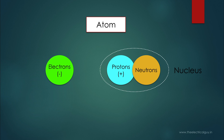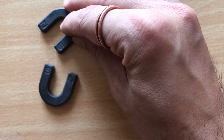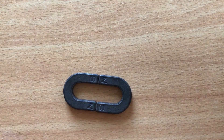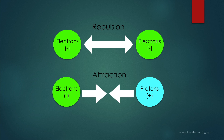Electrons are like the south pole of a magnet and protons are like the north pole. As we know, two similar poles of a magnet repel each other but two different poles attract each other. In the same way, two particles with the same charge will repel each other, and particles with different charges will attract each other. So two electrons, which are negatively charged, will repel each other, and two positively charged protons will also repel each other.